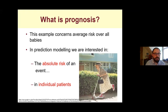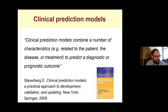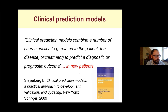Clinical prediction models are also known as clinical prediction rules, prognostic or diagnostic models, nomograms, and scorecards. They are essentially mathematical equations which combine a number of characteristics — related to the patient, the disease, or the treatment — in order to predict a diagnostic or prognostic outcome. A diagnostic outcome is one potentially present in the patient now, whereas a prognostic outcome is something that may happen in the future. Importantly, we want these models to perform well in new patients, not just in the data used to develop the model.